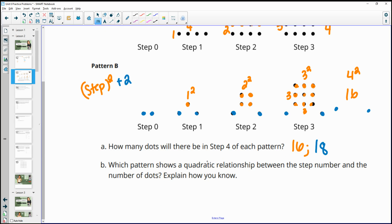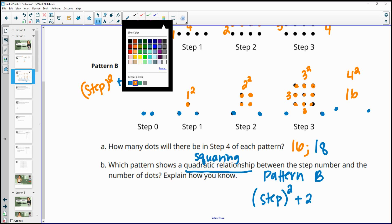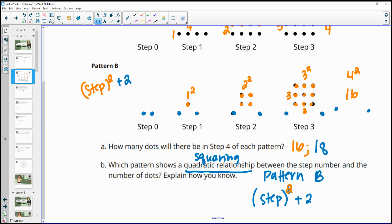Then it says, which pattern shows a quadratic relationship? And quadratic means that you're squaring the variable. And so that's happening in pattern B, because we squared that step number, because it's the step squared plus two. So this squaring right here makes it quadratic.